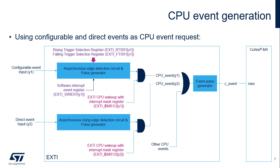This figure explains the various stages enabling the conversion of a configurable event active edge into a processor event. Both configurable and direct events can be configured to issue events to the CPU, steered to its RxEV input. Unlike interrupt requests, the CPU has a unique event input, so all event requests are OR'd together before entering the event pulse generator. The registers used to mask the generation of events are different from the ones used to mask interrupts: EXTI_EMR instead of EXTI_IMR. The dual-core STM32-WL5 microcontroller has independent event generation logic for each CPU.